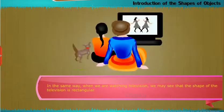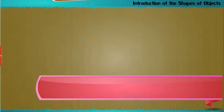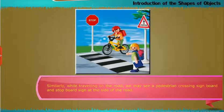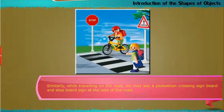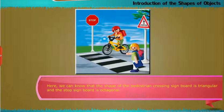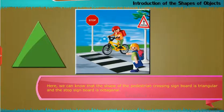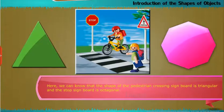In the same way, when we are watching television, we may see that the shape of the television is rectangular. Similarly, while traveling on the road, we may see a pedestrian crossing sign board and a stop sign board at the side of the road. The shape of the pedestrian crossing sign board is triangular and the stop sign board is octagonal.